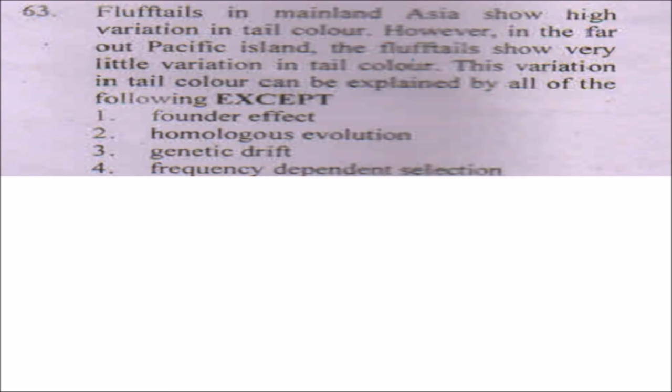The next question: flupptails in mainland Asia show high variation in tail color, but in far-out Pacific islands they show very little variation. These variations in tail color can be explained by all of the following except: founder's effect, genetic drift, and frequency-dependent selection can all introduce variation in a population. However, option two — homologous evolution — is an evolutionary pattern where similar structures developed from a common ancestor, and it does not explain variation reduction. The answer which does not support the given statement is number two.